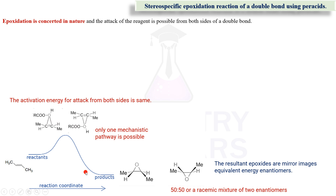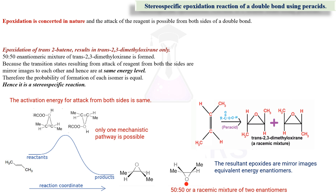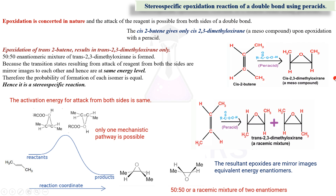Both attacks have the same mechanistic pathway, hence formation is 50-50 — that is a racemic mixture — and the products formed are mirror images. For example, if you take trans-2-butene, it is going to result in a racemic mixture. And if you take cis-2-butene, it is going to result in a meso compound.